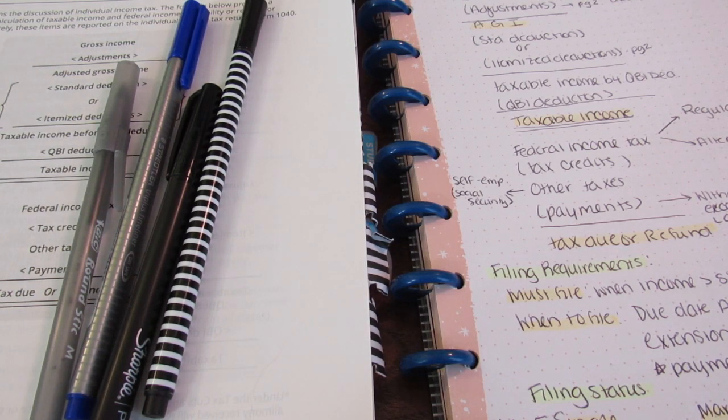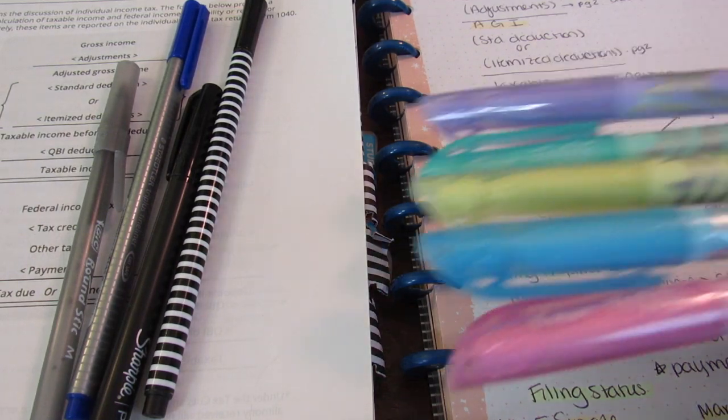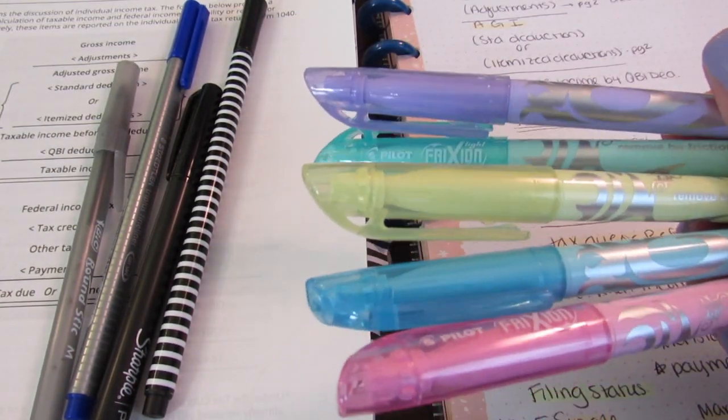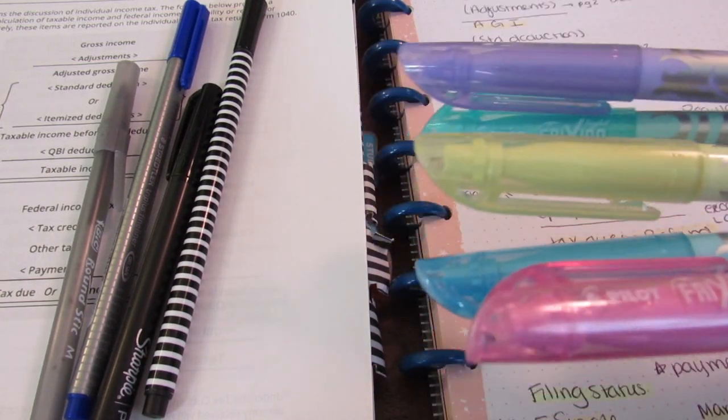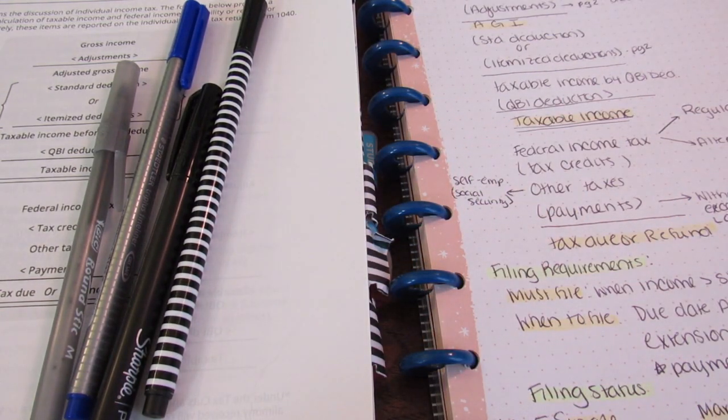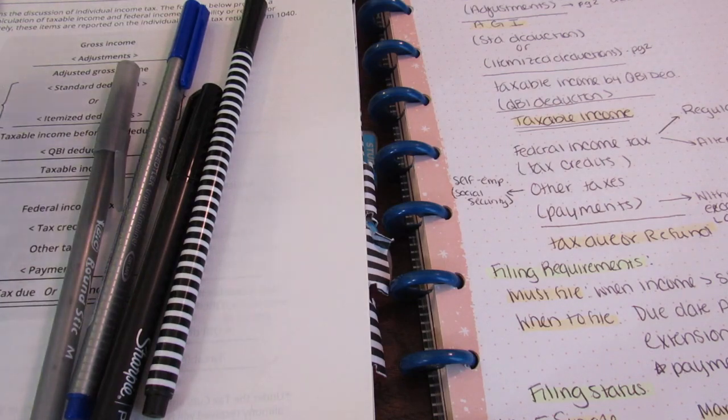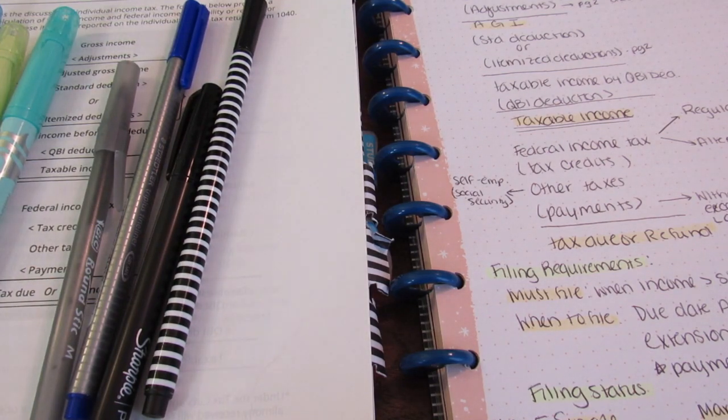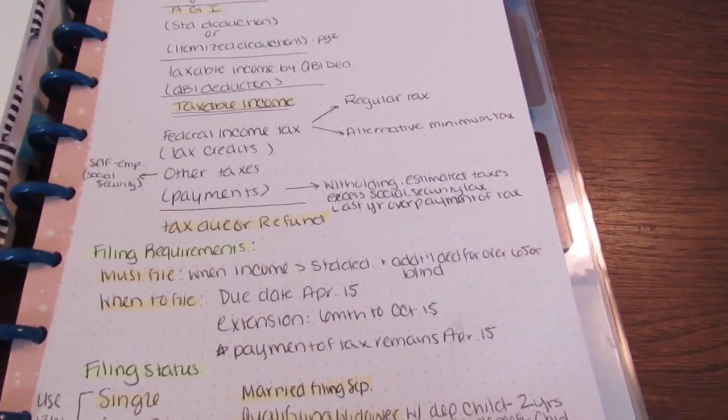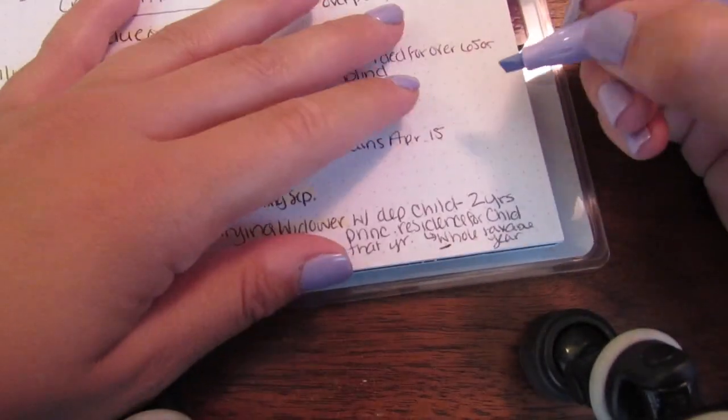But these I got and they're actually really nice, they're called Frixon, Pilot Frixon and they're like in the pastel line because I really like pastel highlighters. I just find it easier to read through. However these are not as light as the mild liners but they do like erase.